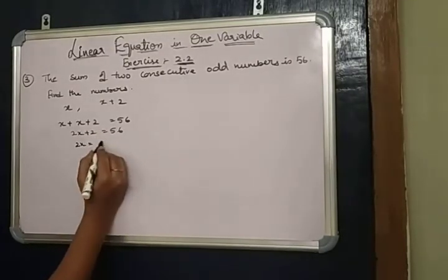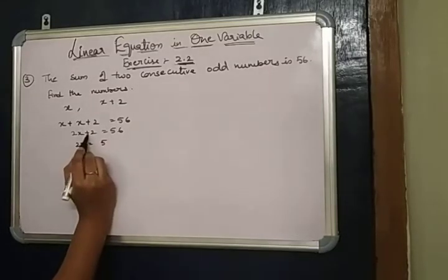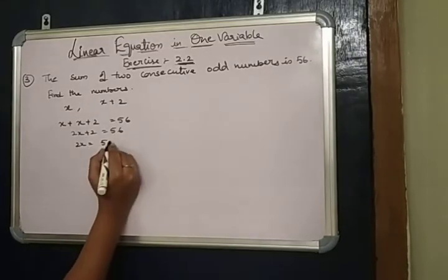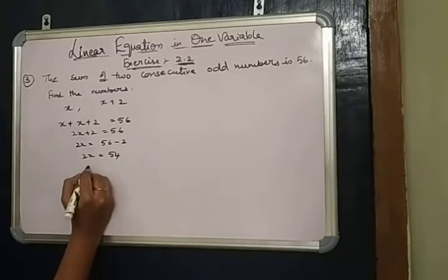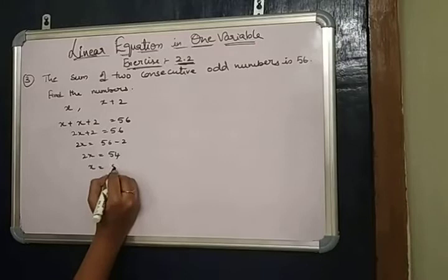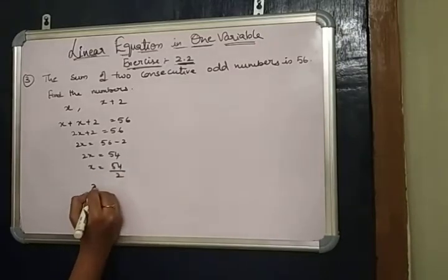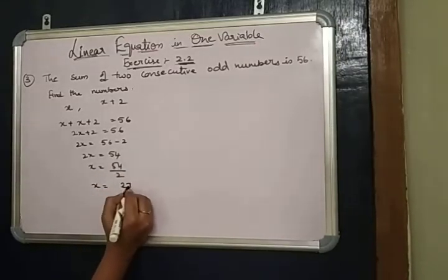2X equals 56. When we transpose this 2 to the right hand side, 56 minus 2, 2X equals 54, where X equals 54 divided by 2, X equals 27.